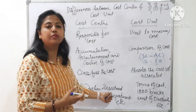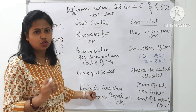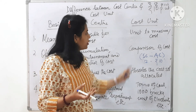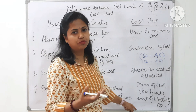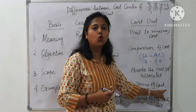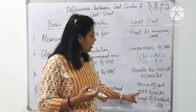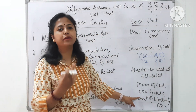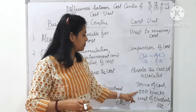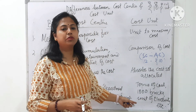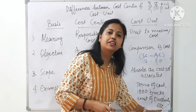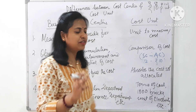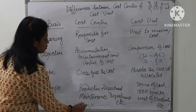Coming to examples: in an organization, the production department is a cost center because it incurs all the cost, and the maintenance department is also a cost center. Whereas in the case of cost units, we measure the cost in terms of some units — like tons of coal in a colliery. In a brick industry, we generally measure cost in terms of thousand bricks rather than one brick. In the case of electricity, we measure cost per unit of electricity consumption. These are the basic differences between cost center and cost unit.